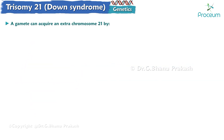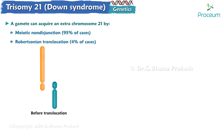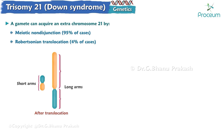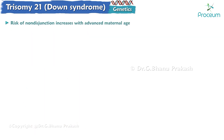A gamete can acquire an extra chromosome 21 by meiotic non-disjunction, accounting for 95% of cases; Robertsonian translocation, 4% of cases; and mosaicism, 1% of cases. The risk of non-disjunction increases with advanced maternal age.